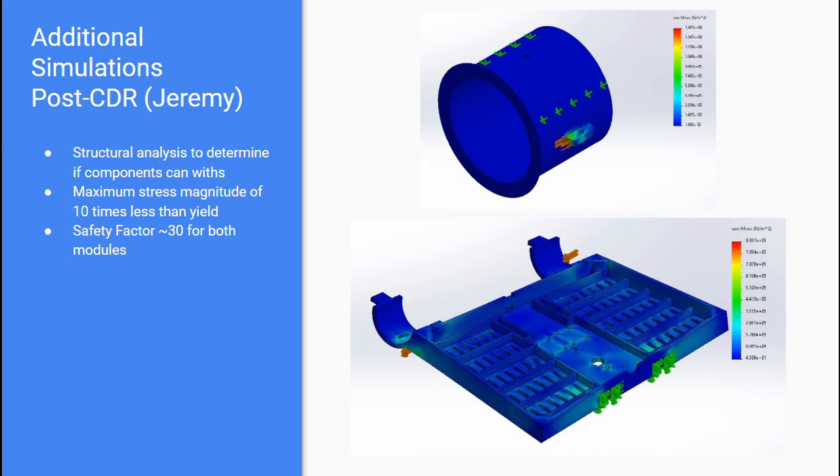Structural analysis was finally conducted on the actuator tabs and the chassis to test if the chassis can withstand the forces we are expecting from the wind and actuators, and if the actuator tabs can withstand those reaction forces it creates on the chassis. In both test cases, the maximum stress generated was about 30 times less than the yield, showing that the tabs and chassis are structurally robust.